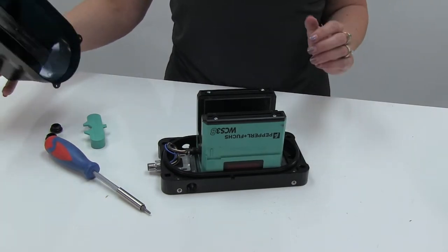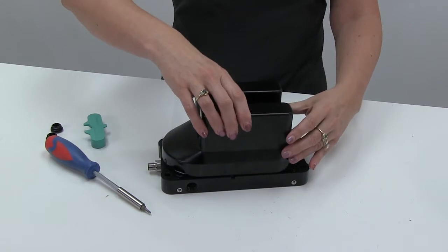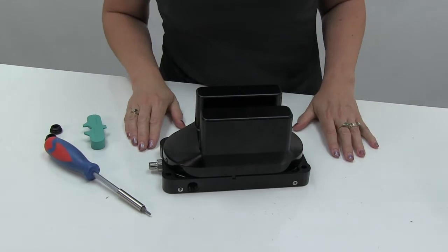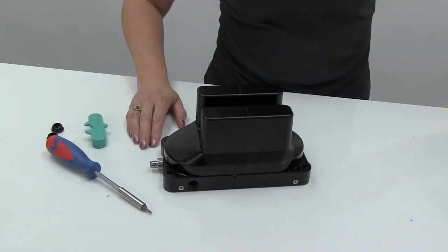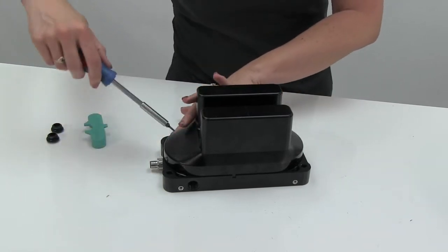Next, take the cover. Line it up with the four holes on the main housing. And use the stainless steel screws with washers to attach the cover to the main housing.